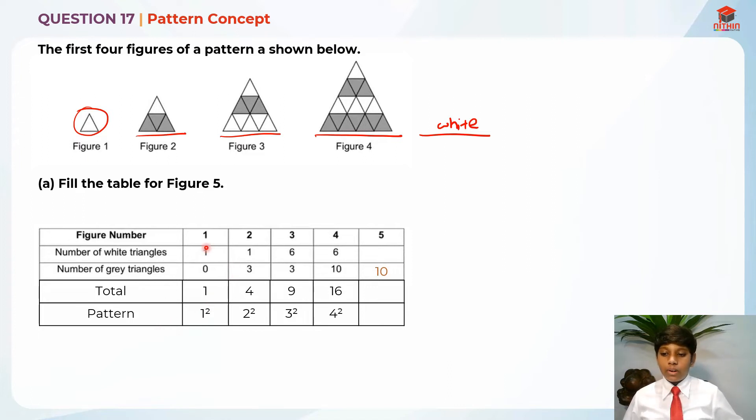And what is this total and pattern? The total is basically number of white plus grey. It's 1, 4 for figure 2 and 6 and 3 is 9 for figure 3, 16 for figure 4. So the pattern is basically 1 squared, figure number squared, 2 squared is 4, 3 squared is 9, 4 squared is 16. So in order to find the total for figure number 5, it should be actually 5 squared, which will give us 25. And in order to find the white triangles, there's actually no pattern. We just need to take the total minus 10, which will give us 15. So this is the answer for part A: 15 and 10.